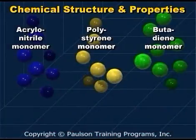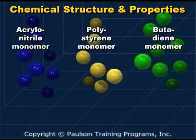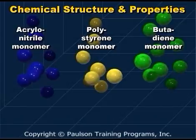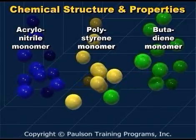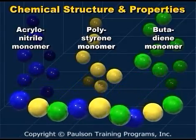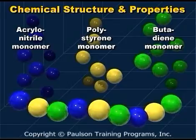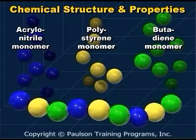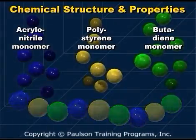ABS is actually a combination of two plastics — acrylonitrile and polystyrene — and one rubber, butadiene. The combining of these three monomers gives us the plastic ABS. Varying the percentage of the individual monomers will create many different grades of ABS.